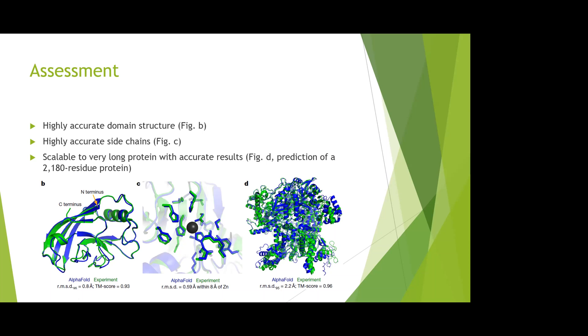From figure D, it can predict highly accurate side chains. The green ones are still the ground truth authentic structures from simulations, and the blue ones are the predicted structures from AlphaFold.